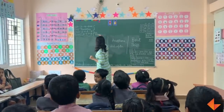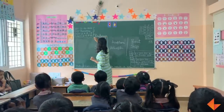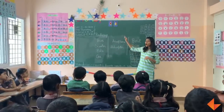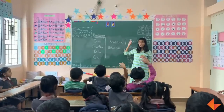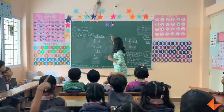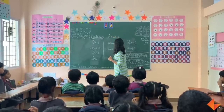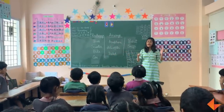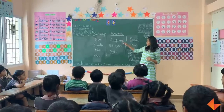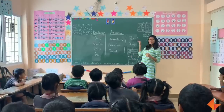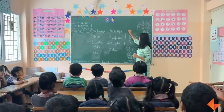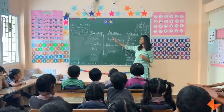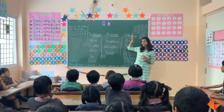This is called roadways. Roadways. Many of you said rocket — rocket travels in the air. These are called airways. Aeroplane, helicopter, and rocket — all these vehicles travel in the air. Ship travels on water — these are called waterways. So we have roadways, airways, and waterways.